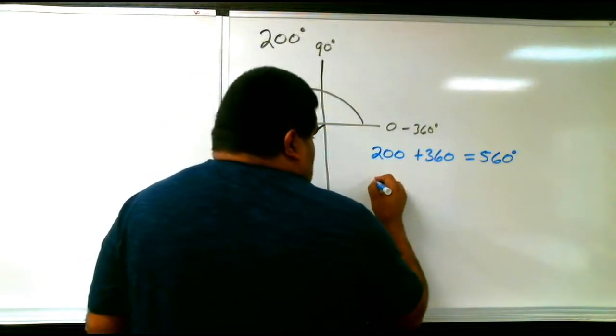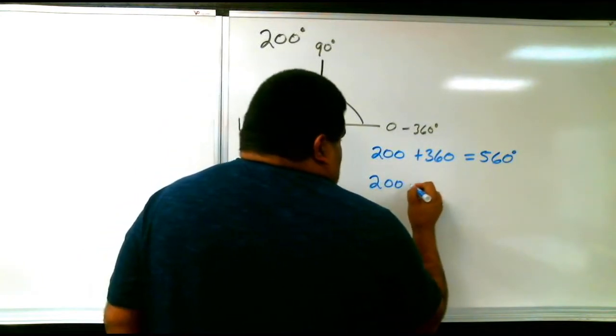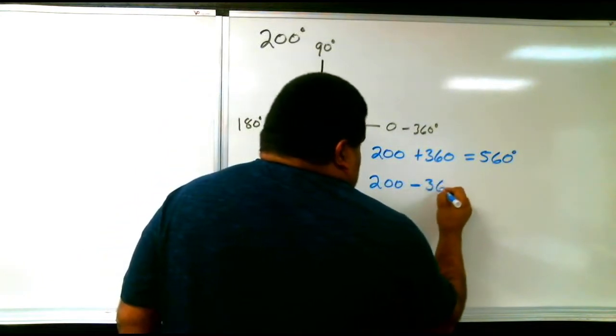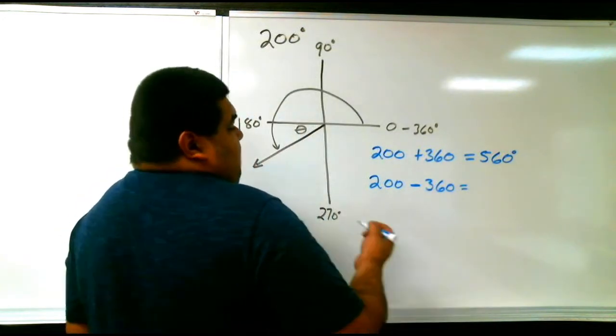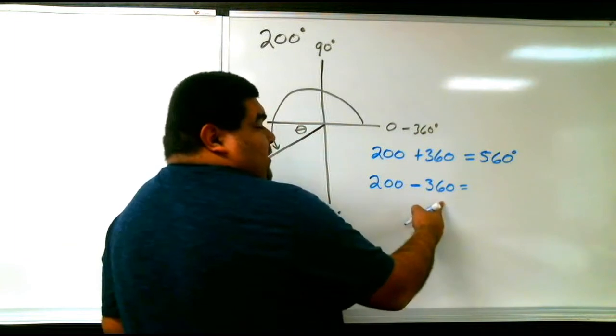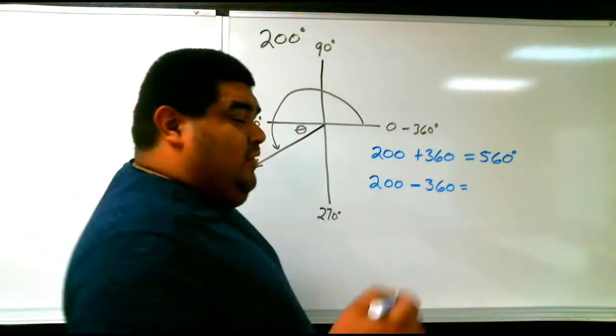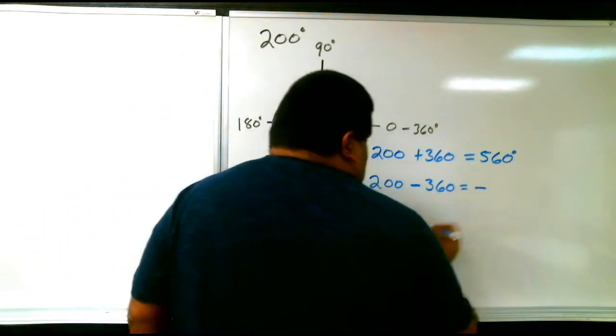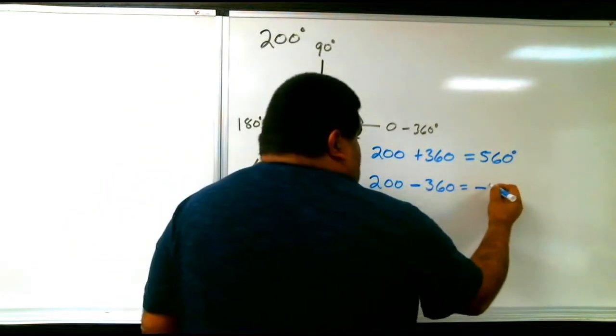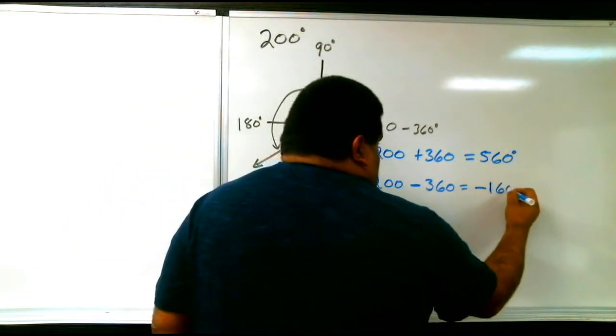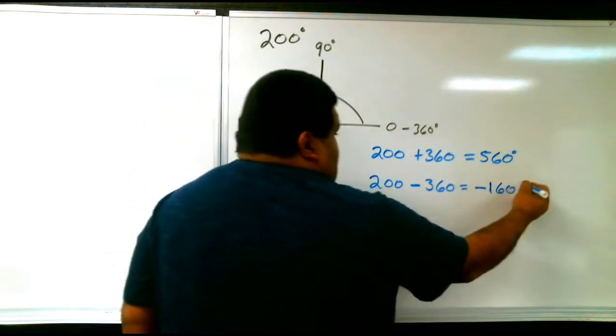Our negative would be 200 minus 360 degrees equals. Obviously, since the bigger number is negative, which is 360, our answer is going to be negative. I'm obviously going to already do the math, negative 160 degrees.